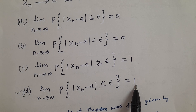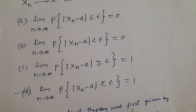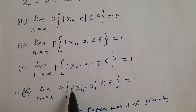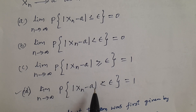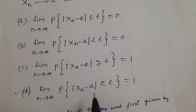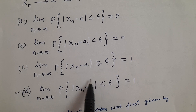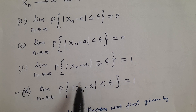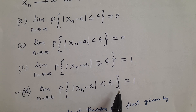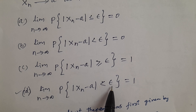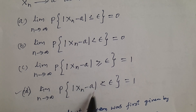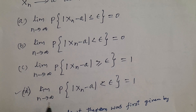I have discussed and explained very clearly in the previous class what convergence in probability is. Whatever the difference Xn minus A, the difference should be very small — less than epsilon. Epsilon is a small positive quantity. The probability of getting a very small difference should tend to 1. Therefore, the answer is D.